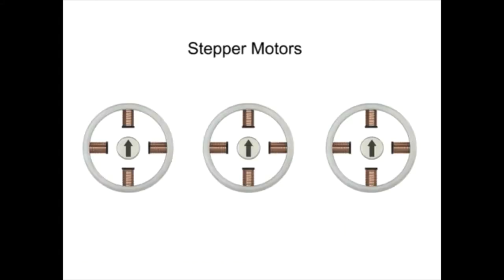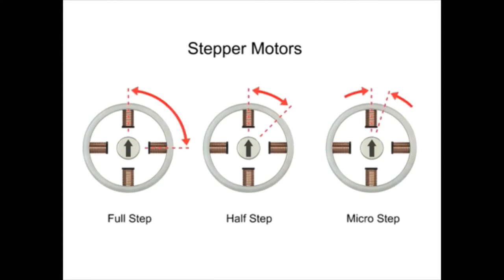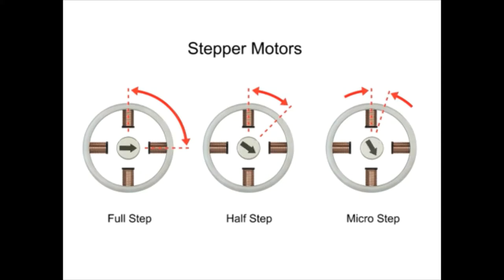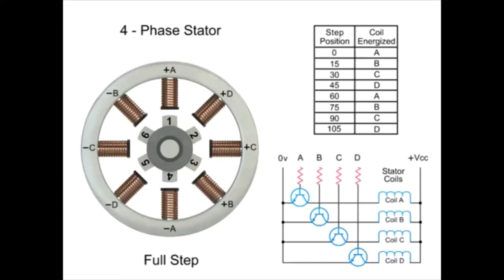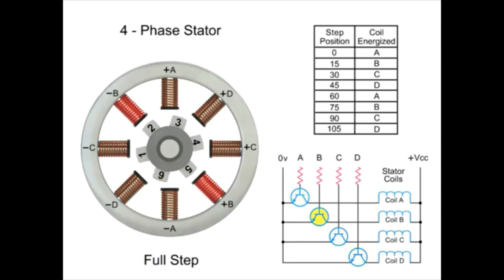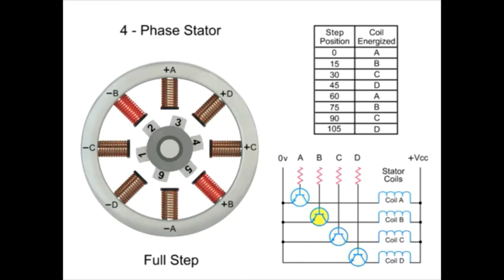Stepper motors have three step modes of operation that include full, half, and microstepping. The type of step mode output of any stepper motor is dependent on the design of the driver. The driver also controls both the step angle and speed of the motor by switching the field coils in a set sequence. For full step mode operation, energizing each set of coils sequentially, the rotor can be made to rotate or step from one position to the next by an angle determined by its step angle.